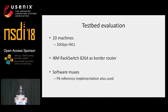We also deployed Beamer on a small testbed. All machines are equipped with 10 gigabit NICs. We used the IBM REC switch as a border router, and mostly software muxes — although we deployed one P4 mux running on top of the P4 reference implementation to check for interoperability.